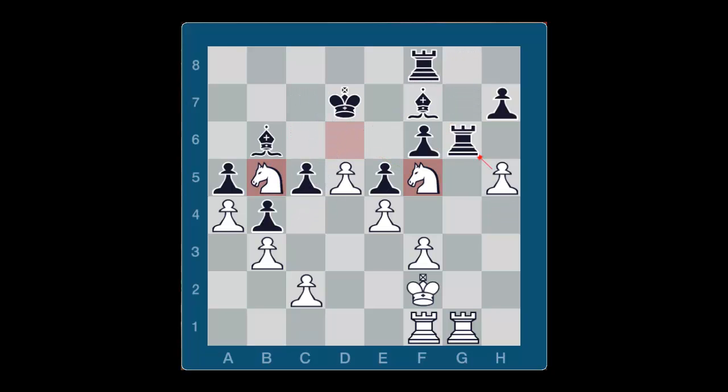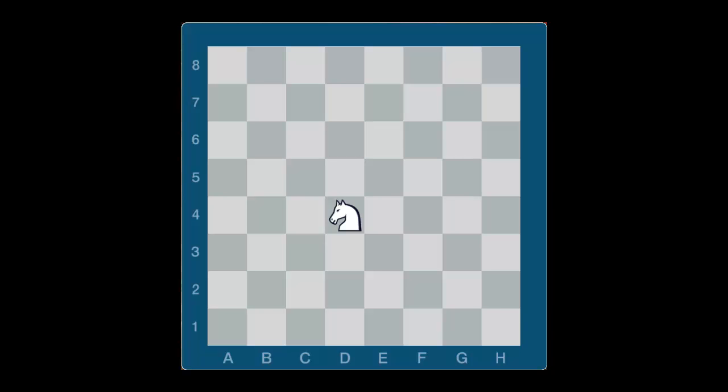Click on all the squares defended by the knight. Good job! The knight can cover eight squares when placed in the center of the board. It's very important to notice how powerful the knight is in the middle of the board.